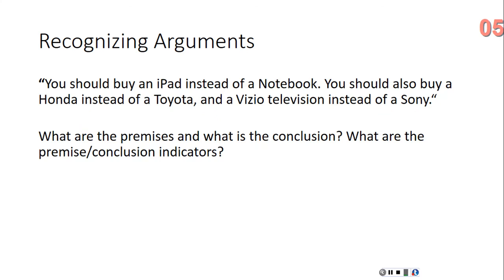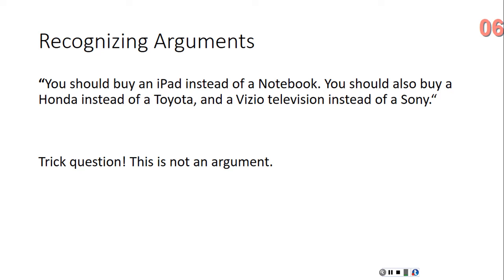Here's a final example: 'You should buy an iPad instead of a notebook. You should also buy a Honda instead of a Toyota and a Vizio television instead of a Sony.' What are the premises and the conclusion? What are the premise and conclusion indicators? This is actually a trick question, since the above passage is not an argument.